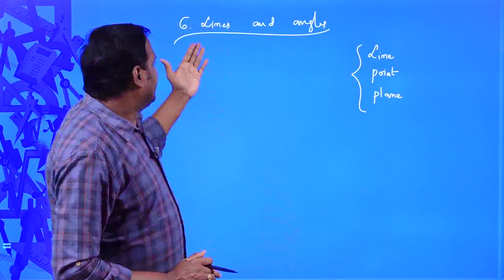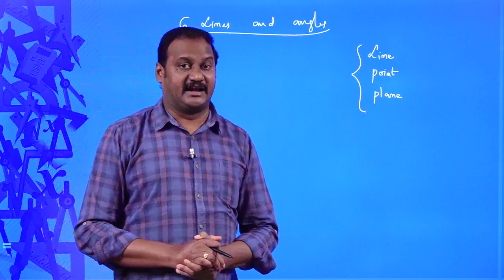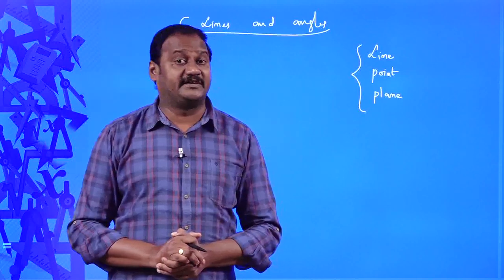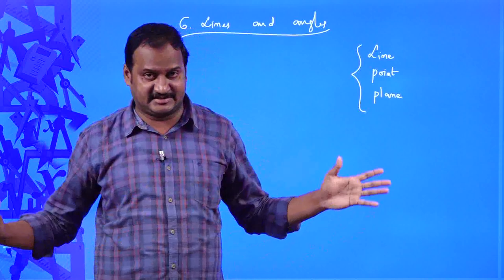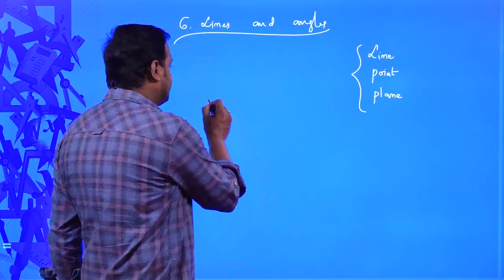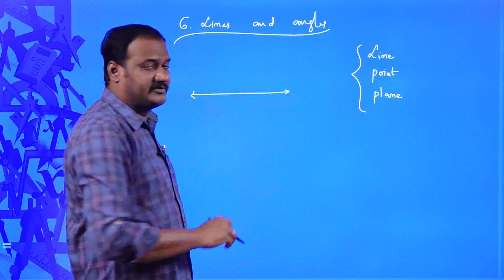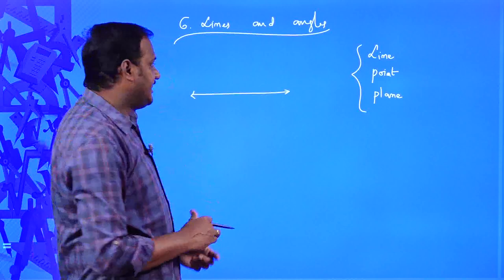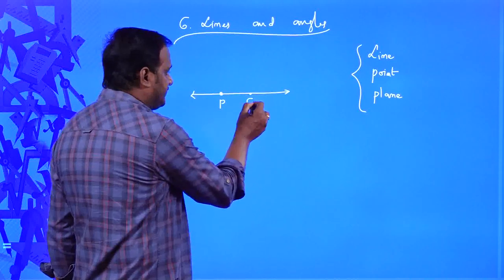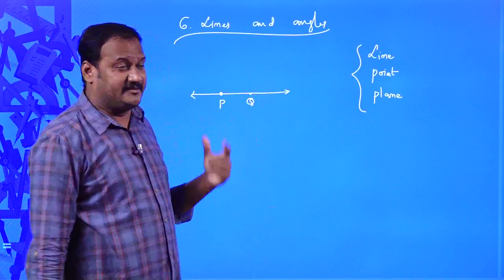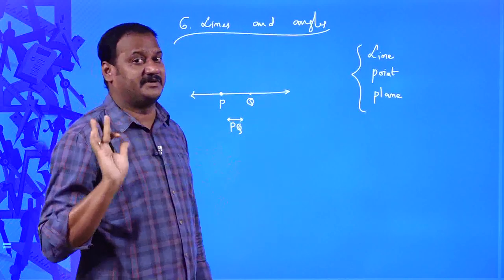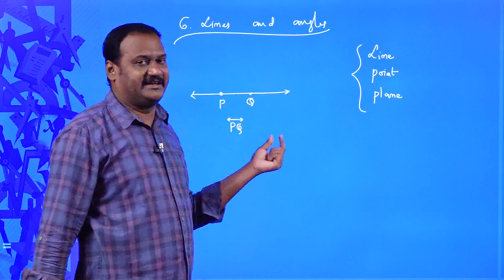Now let us understand different types of lines. A line has a set of infinitely many points and can be extended in both directions — that is the very important property of a line. A line has no starting point and no ending point. If we take two points on the line, say P and Q, we represent it as line PQ with a small line on top. This does not mean it starts at P and ends at Q.